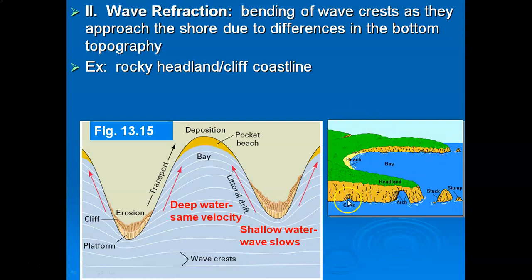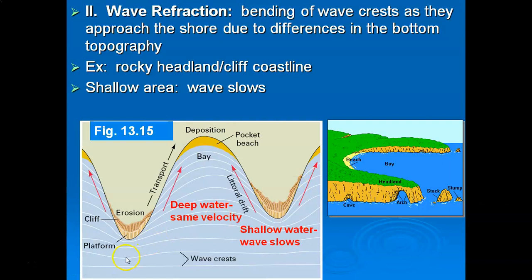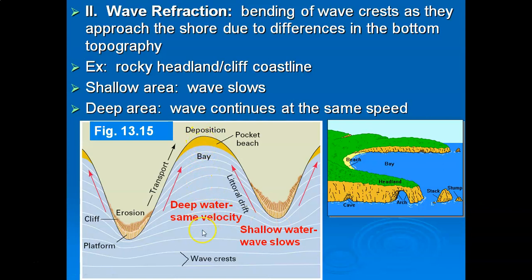To illustrate wave refraction, consider an irregular coastline called a rocky headland coast. These projections are called headlands or sea cliffs, and within the bays you'd find a beach. With a parallel incoming swell wave crest, differences in bottom topography matter: offshore water adjacent to the headland is shallow, so that incoming swell wave crest slows down. But adjacent to the bay where land is farther away, the water is probably still deep and the swell wave crest is not slowed — it continues at the same velocity, producing this wave-bending phenomenon.